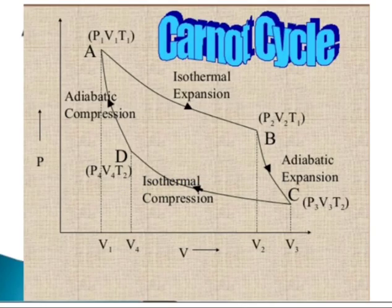Today's topic is the Carnot cycle, and we will see it in detail. The Carnot cycle involves four steps: isothermal expansion, adiabatic expansion, isothermal compression, and adiabatic compression.